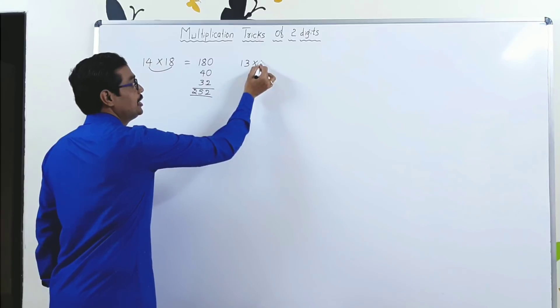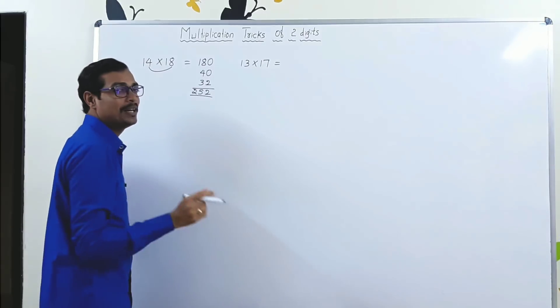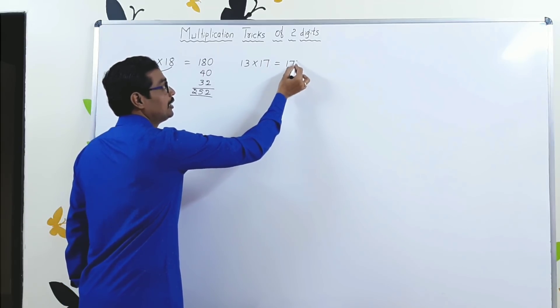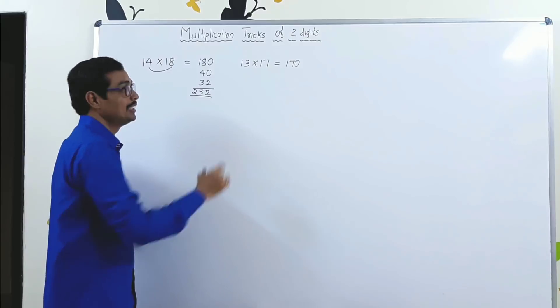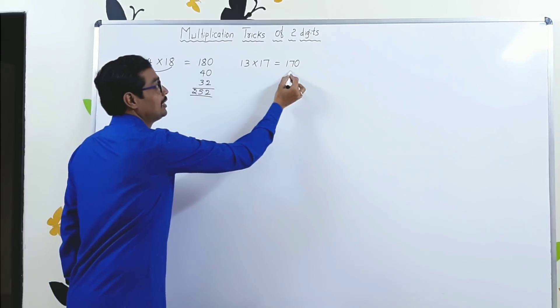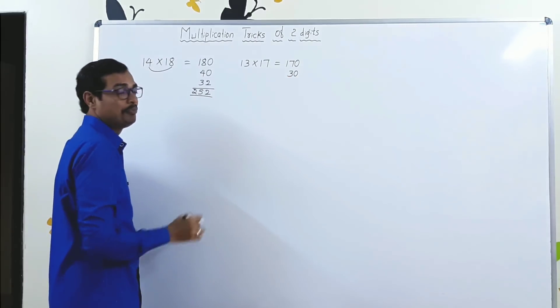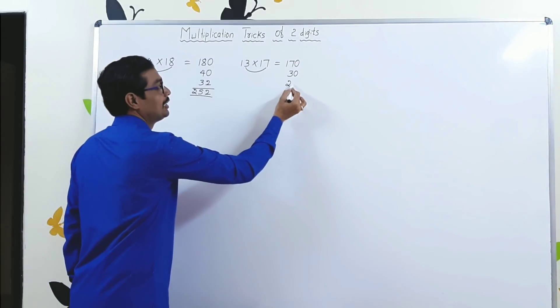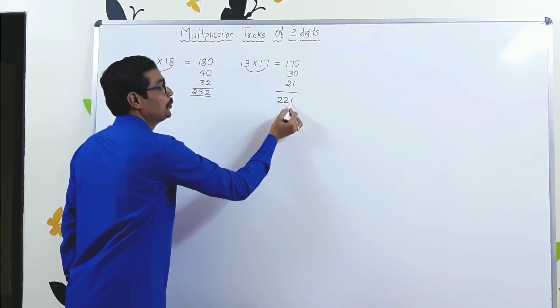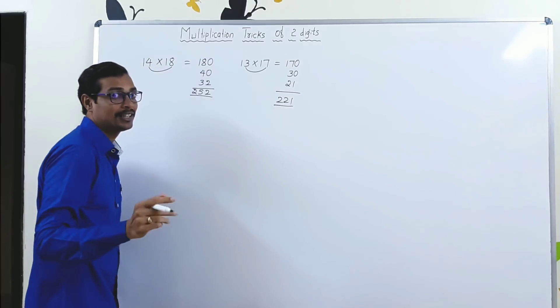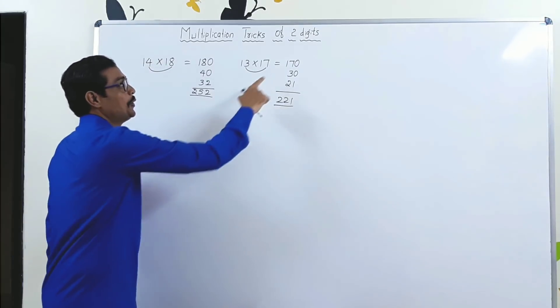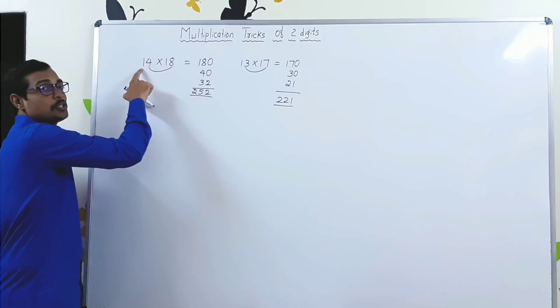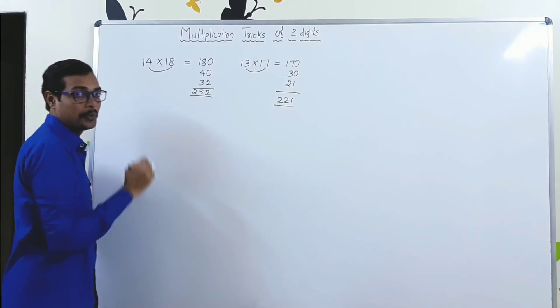Let's take one more example. 13 × 17. Very simple. 17 × 10 is 170. 3 is 30. 3 × 7 is 21. So total is 221. But the condition applies here. 1 has to be in tens place.